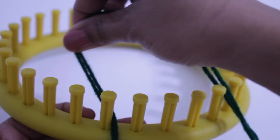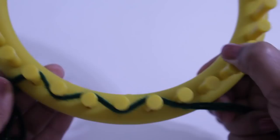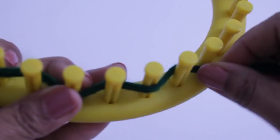And we're gonna be doing the drawstring cast on. So you're gonna take your yarn and put it between the first and last peg. You can go to the right or the left. And we're going to zigzag between every other peg.